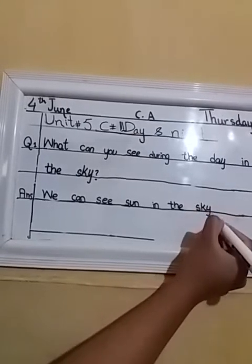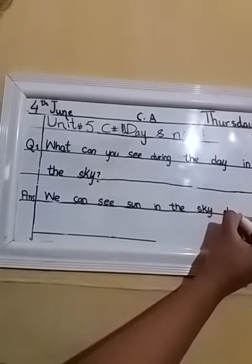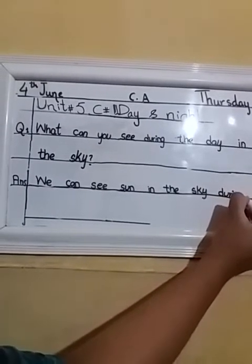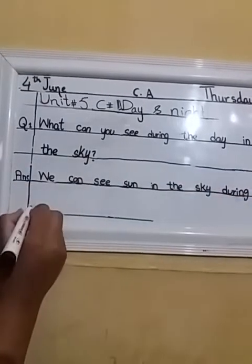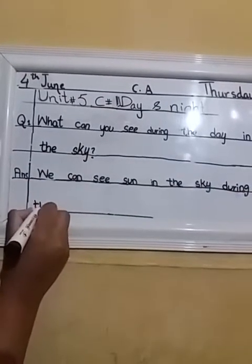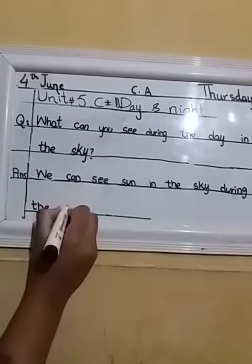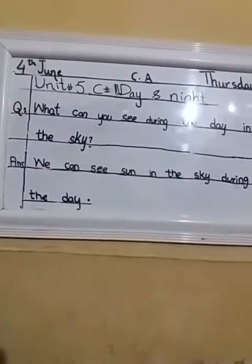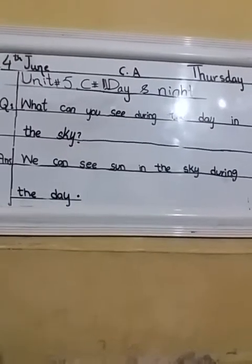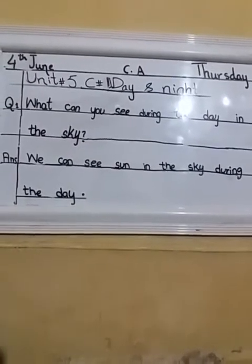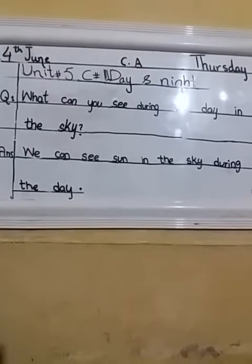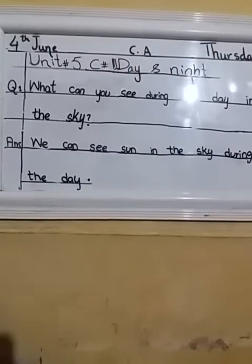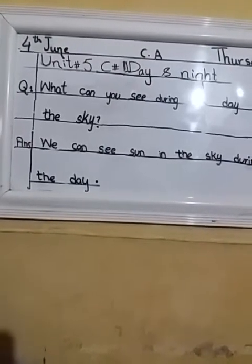We can see sun in the sky during the day. I am repeating the answer: We can see sun in the sky during the day. So for question one — what can you see during the day in the sky — we can see sun in the sky during the day. During the daytime we can see the sun in the sky.